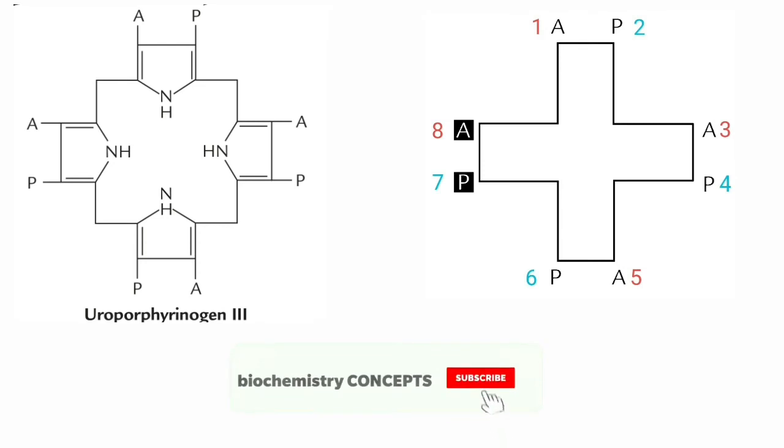Type 3 form is the predominant in biological systems. It is also called as series 9 because Fischer, the pioneer in porphyrin chemistry, has placed it as the ninth in a series of 15 possible isomers.